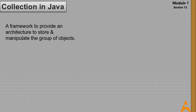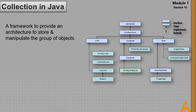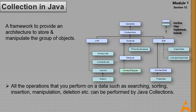Collections in Java is a framework that provides an architecture to store and manipulate groups of objects. All operations such as searching, sorting, insertion, manipulation, and deletion can be performed by Java collections. The collection framework provides interfaces like Set, List, Queue, and Deque, and classes like ArrayList, Vector, LinkedList, PriorityQueue, HashSet, LinkedHashSet, and TreeSet. You can see the hierarchy of the collection framework on your screen.